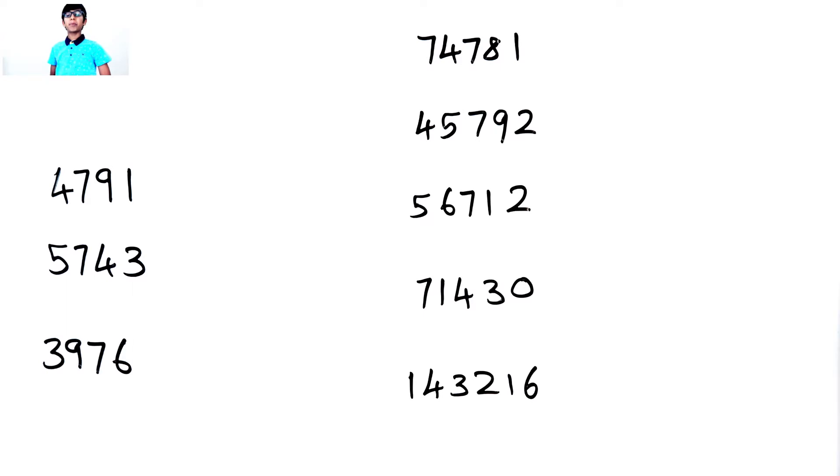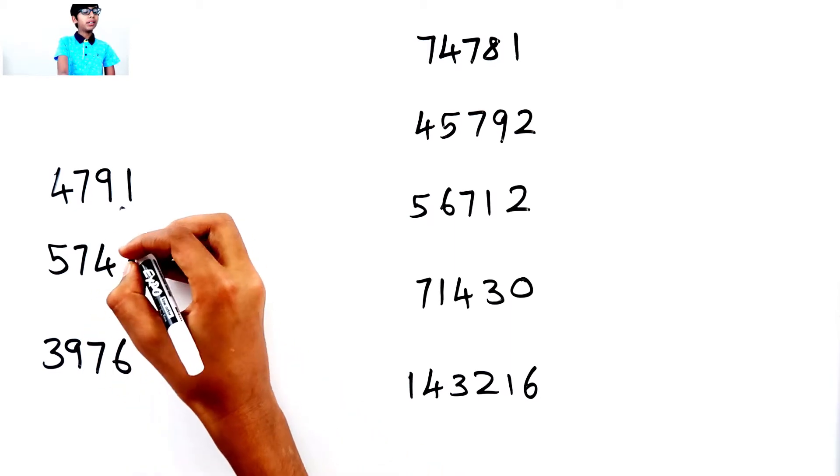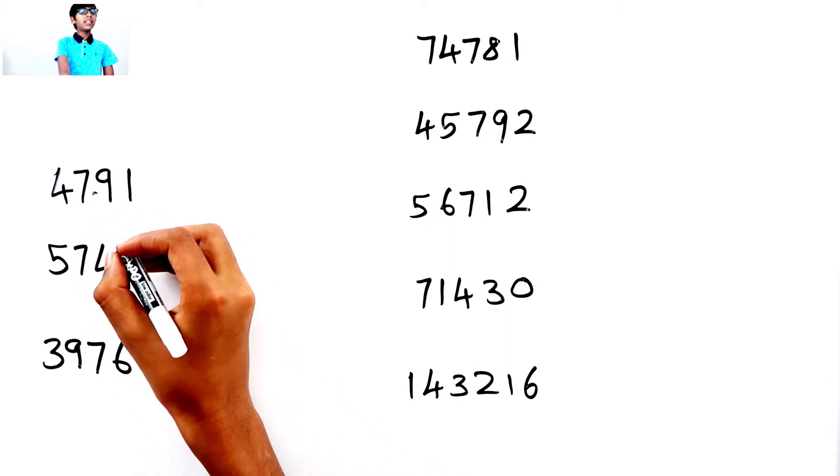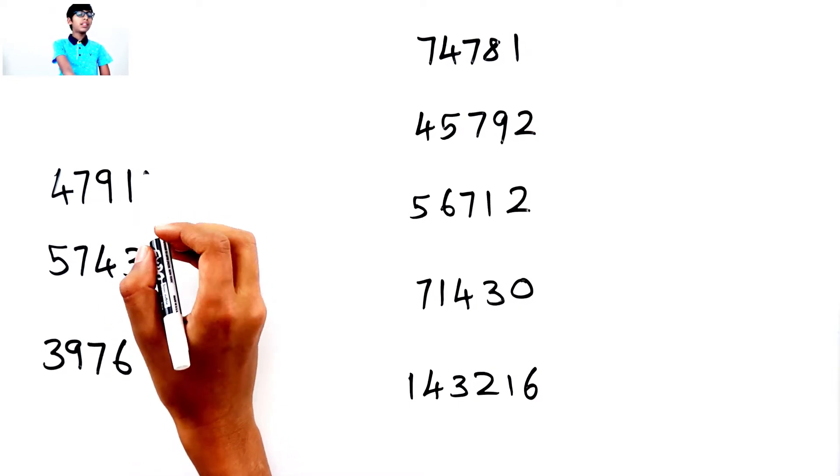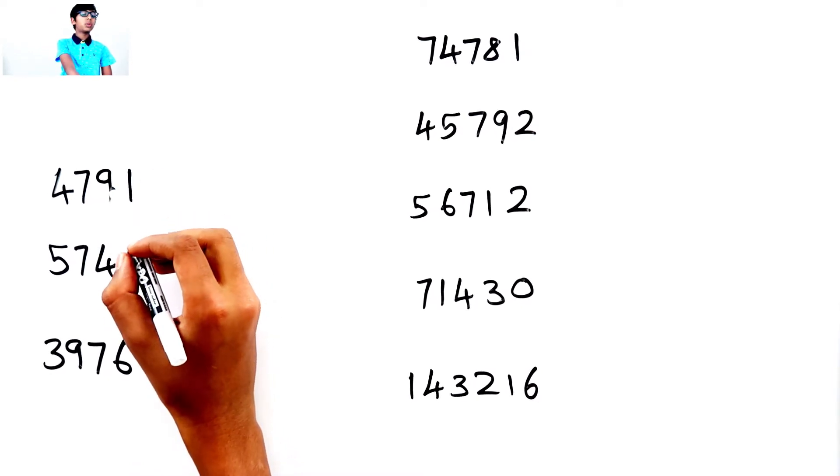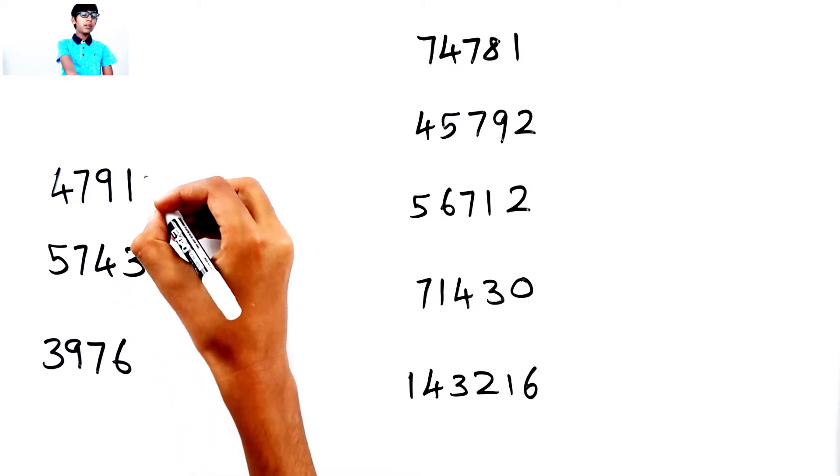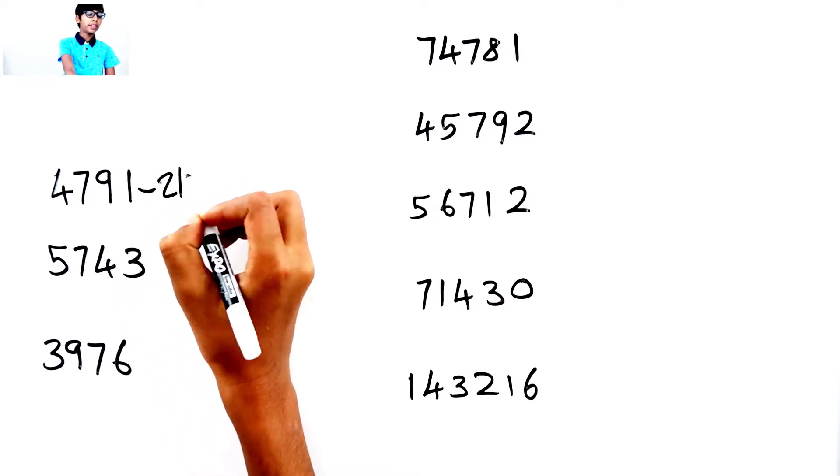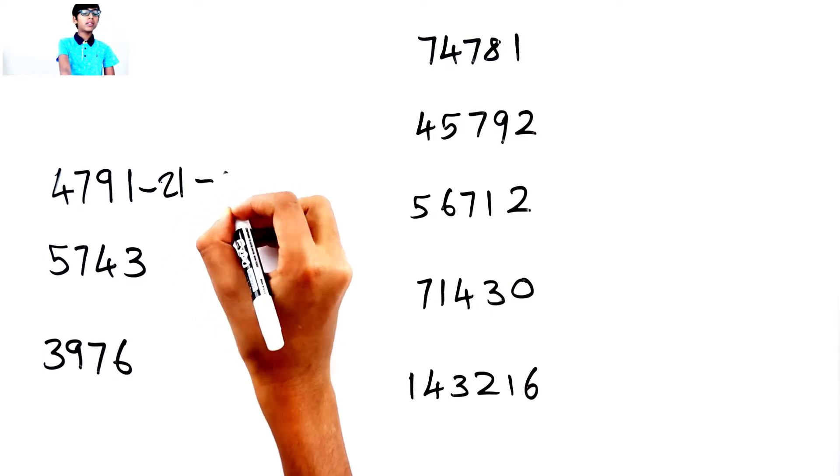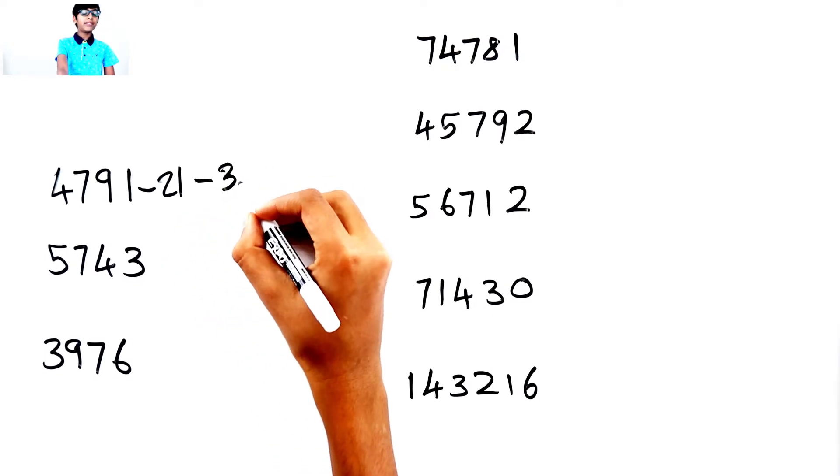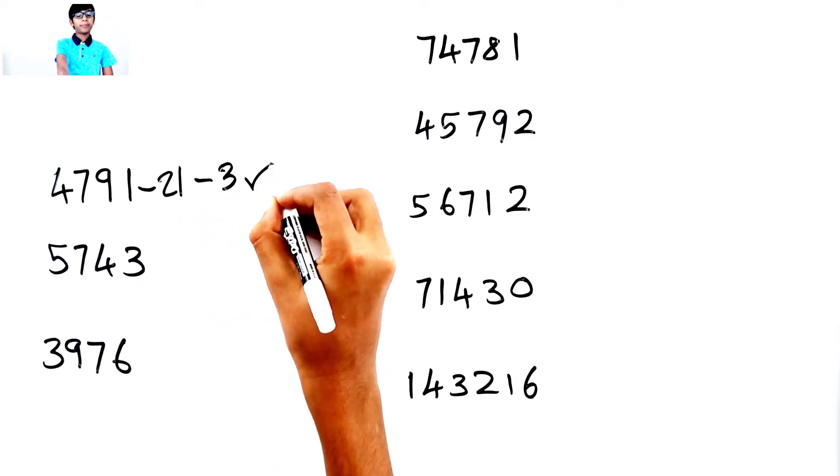Let's see some examples. Okay, so let's see if these numbers can be divided by 3. So, I need to add all of these digits. 4 plus 7 is 11. 9 plus 11 is 20. 20 plus 1 is 21. I'll put 21 here. 21, I mean 2 plus 1 equals 3. This can be divided by 3.